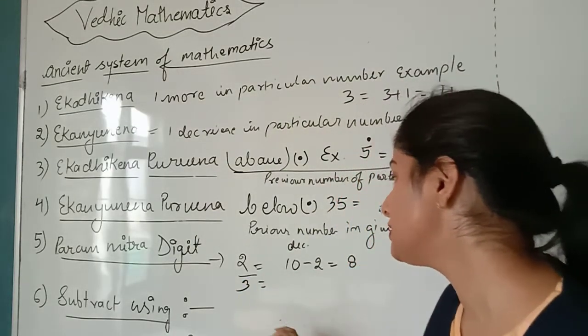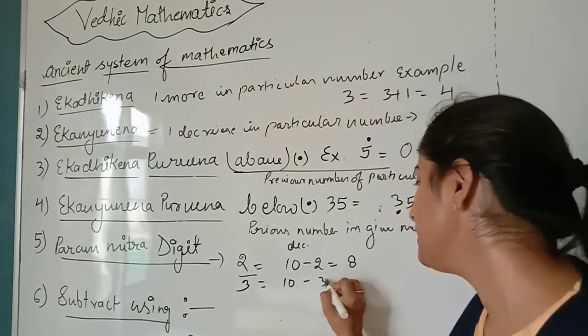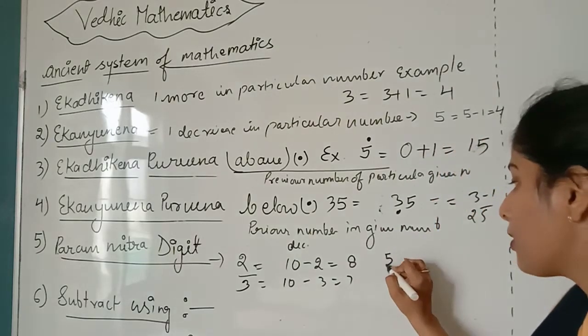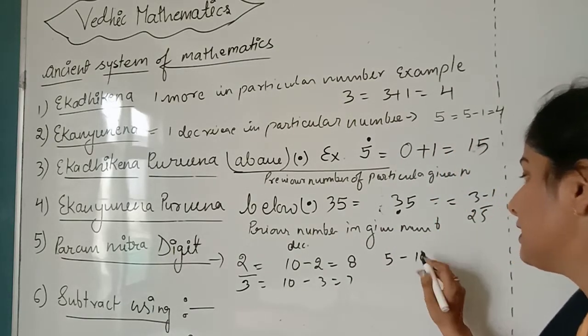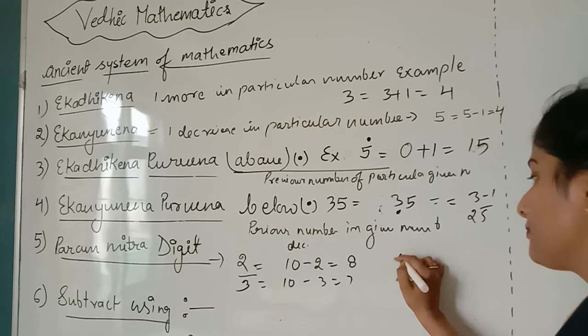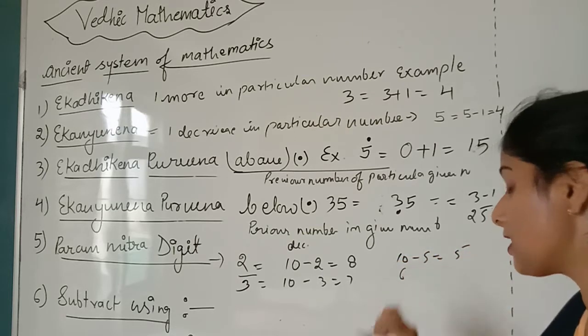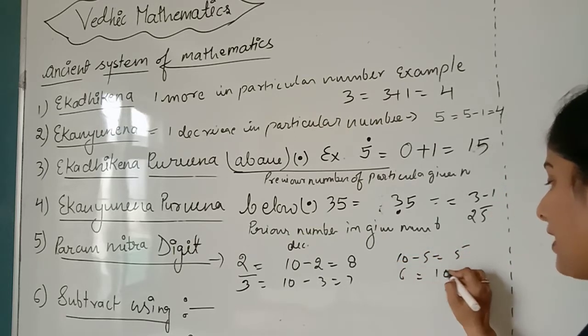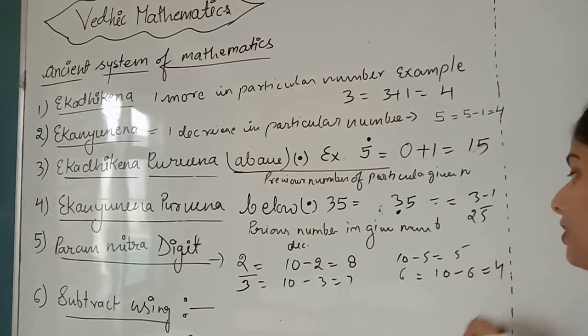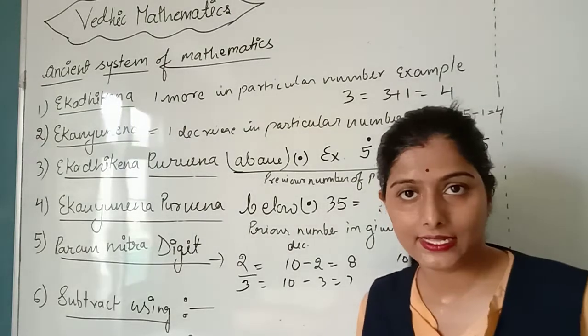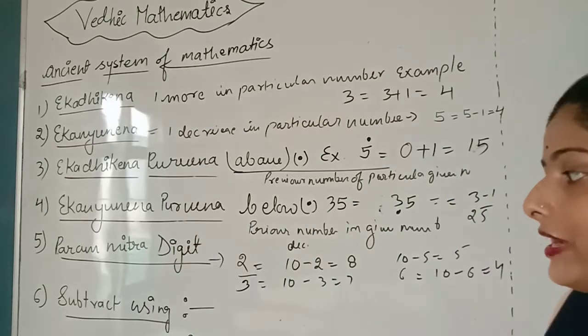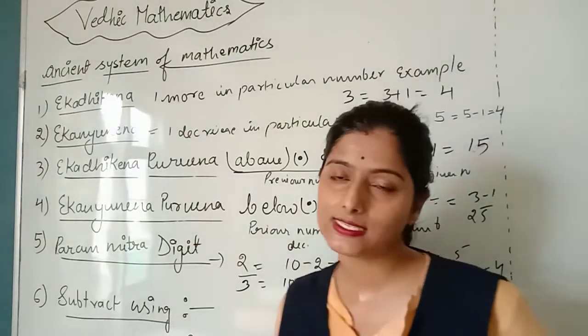The complementary digit of 3 is 10 minus 3 equals 7. For 5, it's 10 minus 5 equals 5. For 6, it's 10 minus 6 equals 4. We subtract from 10, and we get the complementary digit. This is how we do it.